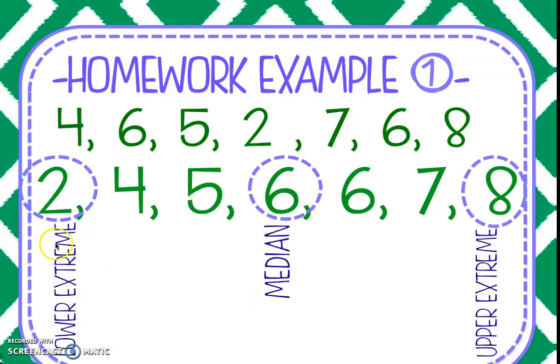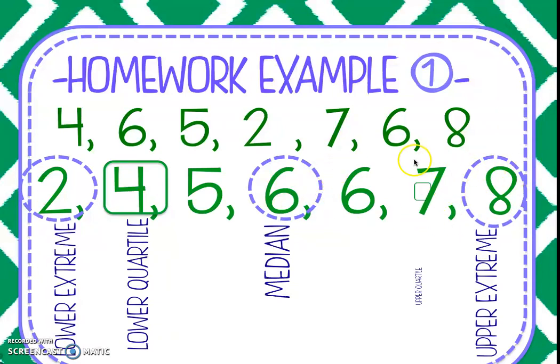Okay, so now our data has been separated into two halves. Here's our lower half and here is our upper half. What we're going to do now is find the median of the lower half. So all of these numbers below six are in our lower half. If I cross out two and cross out five, I get that four is the lower quartile. That is the median of the lower half. Now I got to do the same thing with the upper half. I'm going to mark out six, mark out eight, seven is left, and so that is our upper quartile.